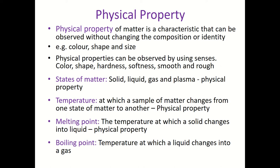Similarly, if I give a small child two bowls — one large and one small — the child doesn't need to go to a lab to tell the difference. They can just say this one is large, this one is small, this one is red, this one is yellow. That's how we define a physical property: it can be observed using the senses, like color, shape, hardness, softness, smoothness, and roughness.